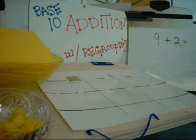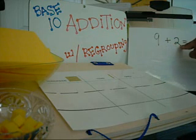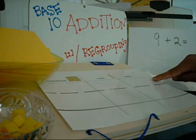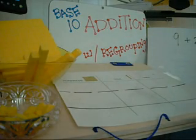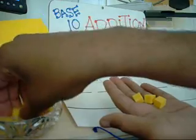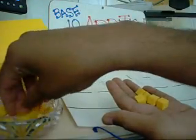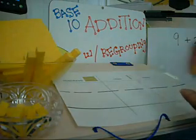Now we're going to represent our addition problem, 9 plus 2, on our base 10 chart using the base 10 blocks. We're going to put our number 9 — counting out 1, 2, 3, 4, 5, 6, 7, 8, 9 — and put that on top.